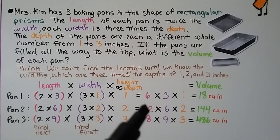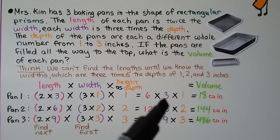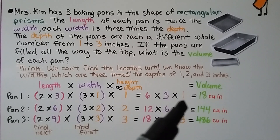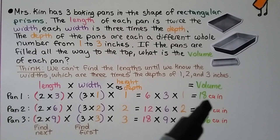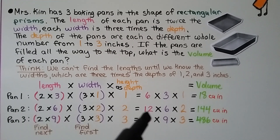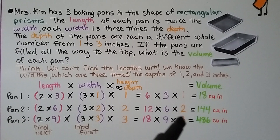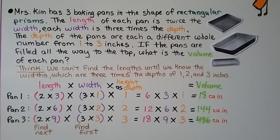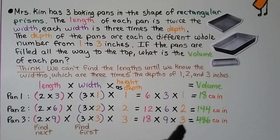Pan 1 is 6 inches in length, 3 inches in width, and 1 inch deep — that's 18 cubic inches. Pan 2 is 12 inches in length, 6 inches in width, and 2 inches deep — that's 144 cubic inches. Pan 3 is 18 inches in length, 9 inches in width, and 3 inches deep — that's 486 cubic inches.